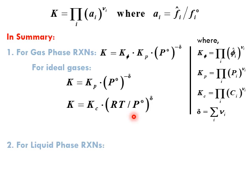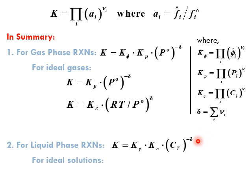For liquid phase reactions: K equals K_gamma times Kc times total concentration Ct raised to the power negative delta. For ideal solutions, all activity coefficients are 1, so K_gamma equals 1 and the relation simplifies accordingly.